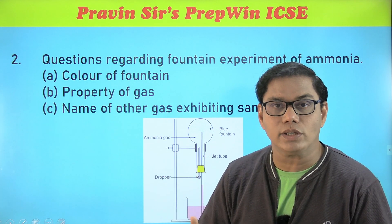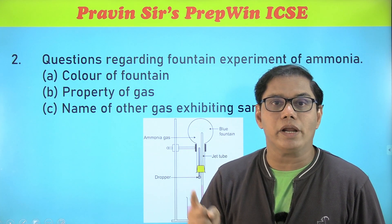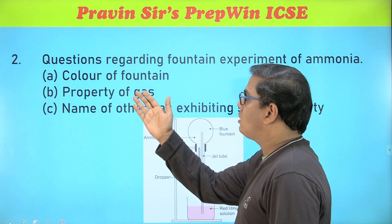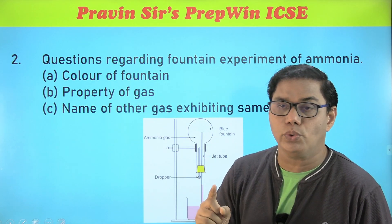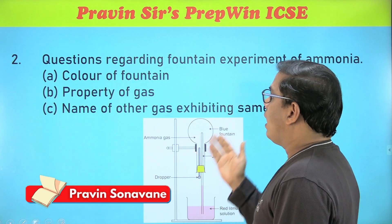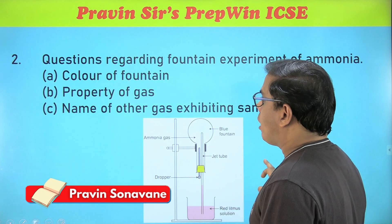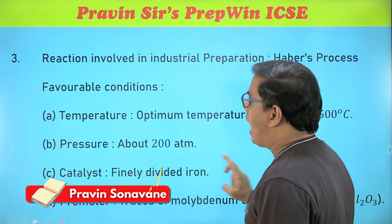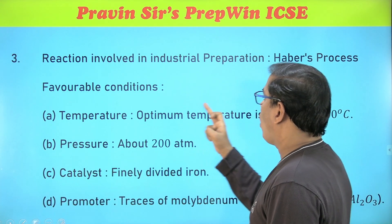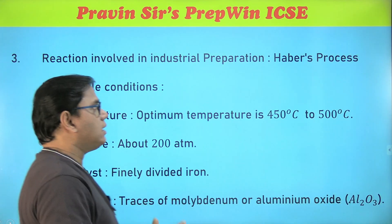Moving on to prediction number two — it is related to the fountain experiment of ammonia. Earlier it was the fountain experiment of HCl; now it is the fountain experiment of ammonia. Questions are almost the same: color of the fountain, the property of the gas, and which other gas exhibits the same property. The last prediction from this chapter is regarding the reaction involved in the industrial preparation — the answer is Haber's process.